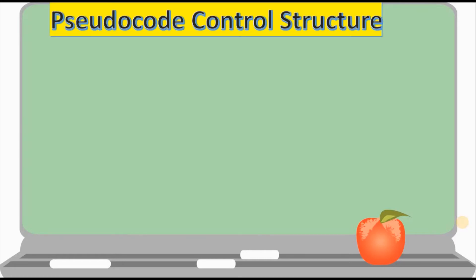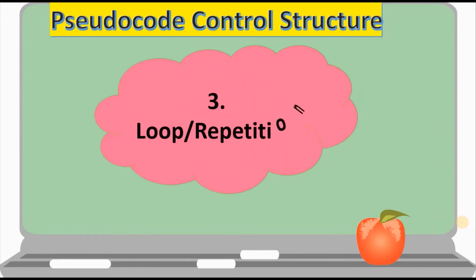Welcome back to another video tutorial. We are still on the topic of pseudocode algorithms, and our main focus is on the control structures used in the body of a pseudocode. Last video tutorial we identified two types of control structures: the sequential and the decision. Our third structure is known as the loop or repetition control structure.